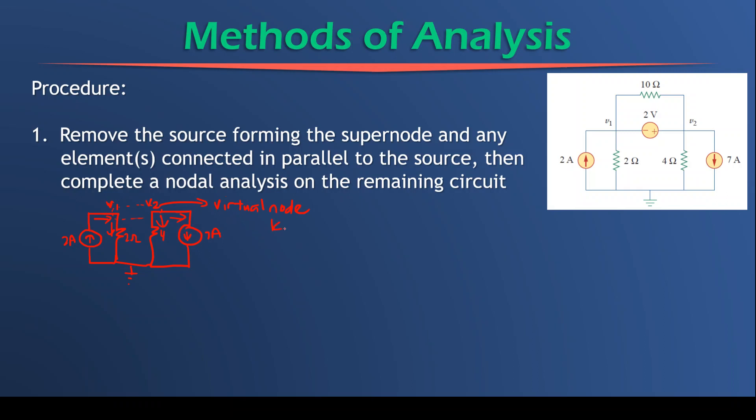So let's do this expression. We're going to say KCL supernode. And the expression will be the current going in is 2 amps equals to the current going out, the first current, which is going to give us V1 minus 0 over 2, plus V2, plus this current going out here will be V2 minus 0 over 4, plus the 7.